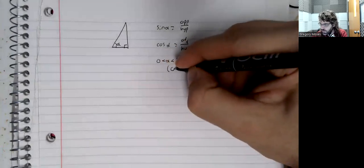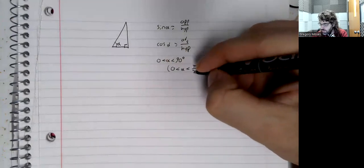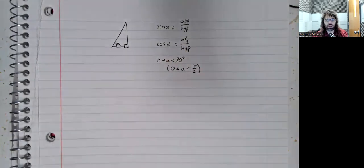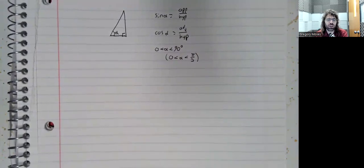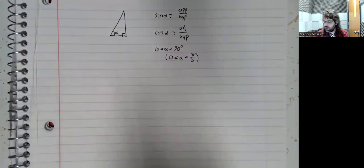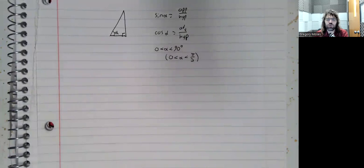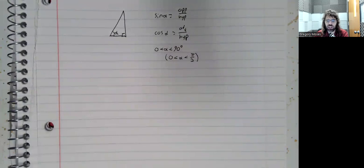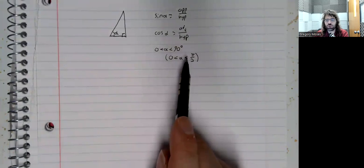If you wanted to measure alpha in radians, alpha is less than π over 2. So we can take the sine or the cosine of an angle, but only if it's between 0 and 90 degrees. And we can take the sine or the cosine of a number, a unitless number, if it's between 0 and π over 2.